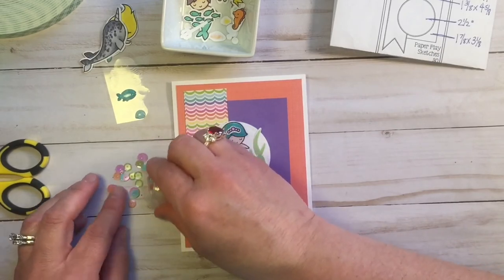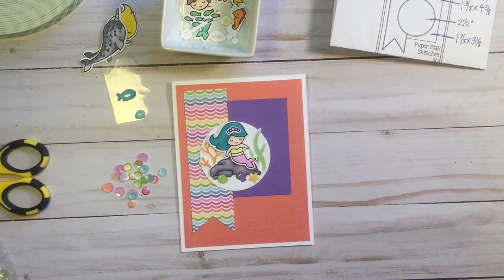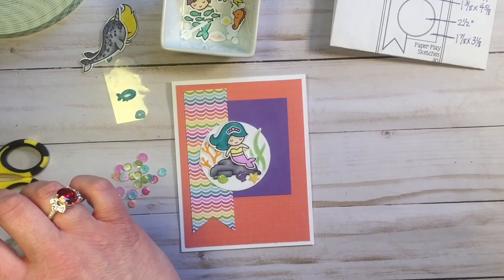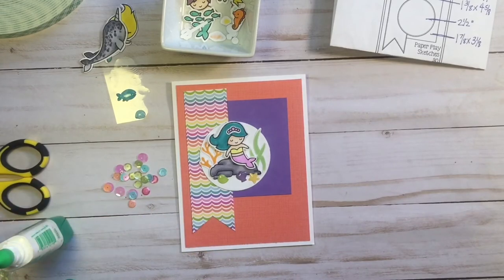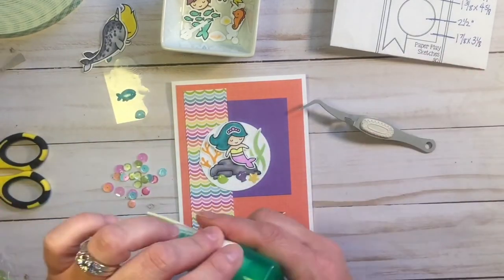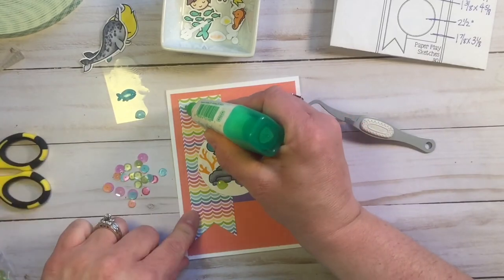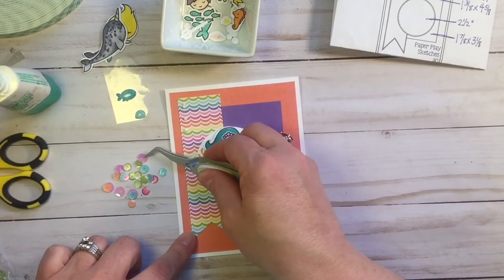Now, I decided I'm going to do some sequins. Get out my liquid adhesive. And I'm just going to do three little dots. Oh, there's the extra tool I was talking about. It's just a pair of tweezers.